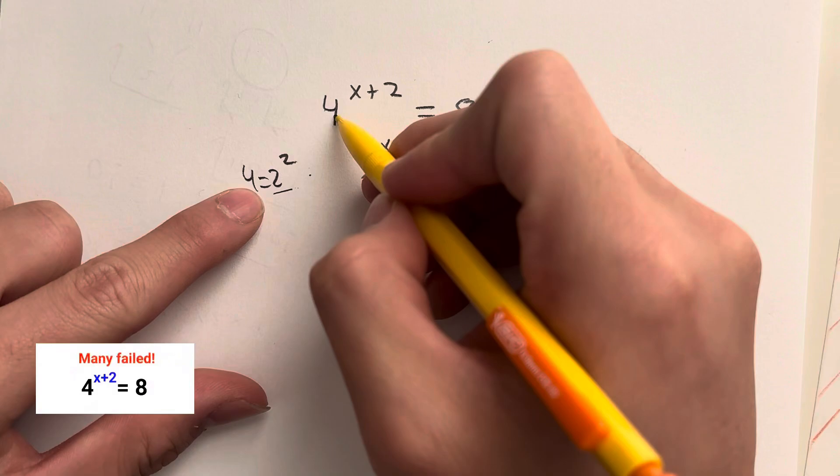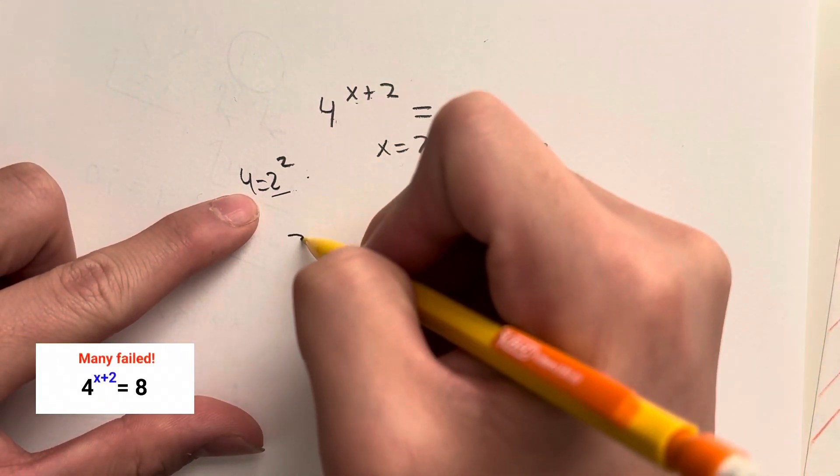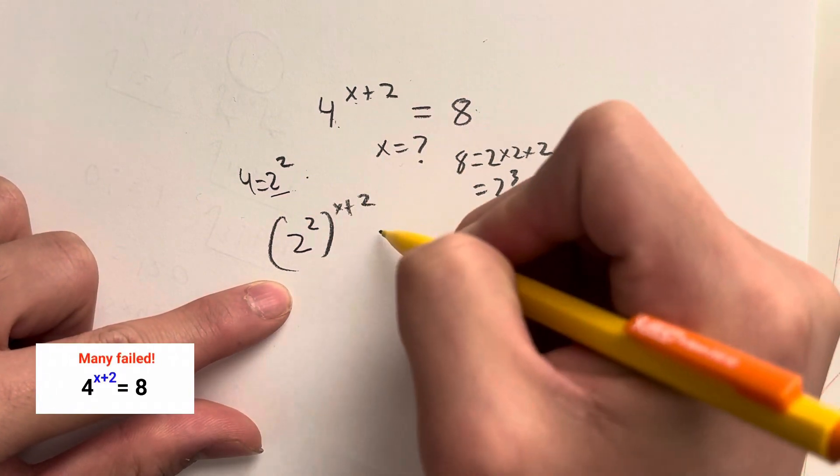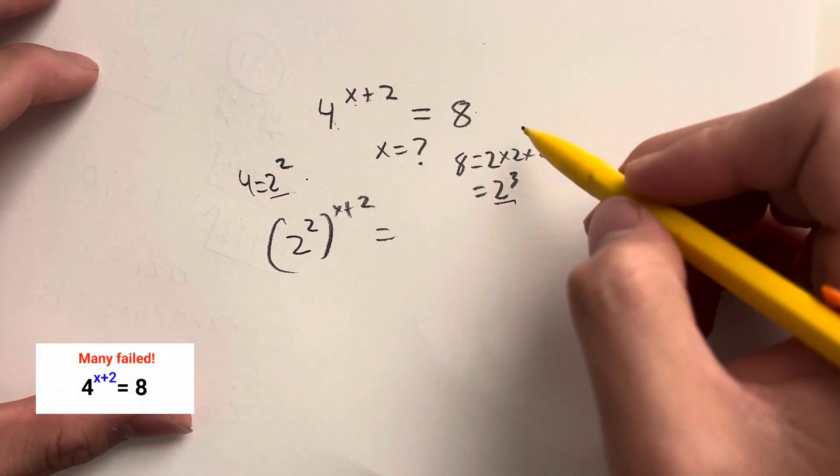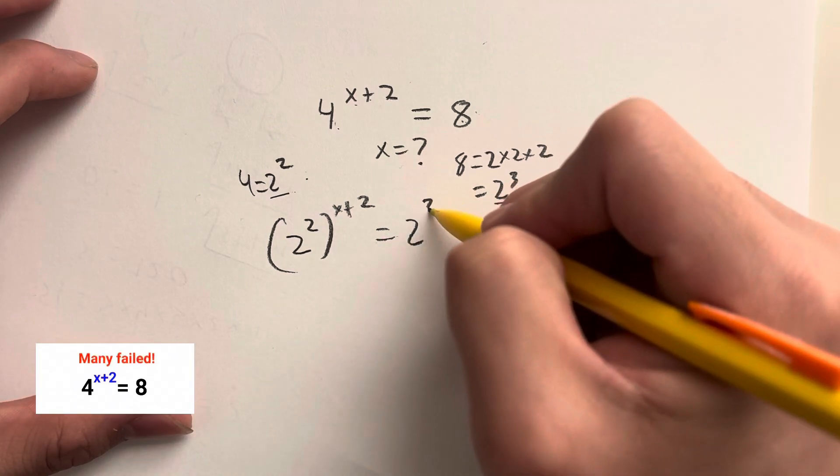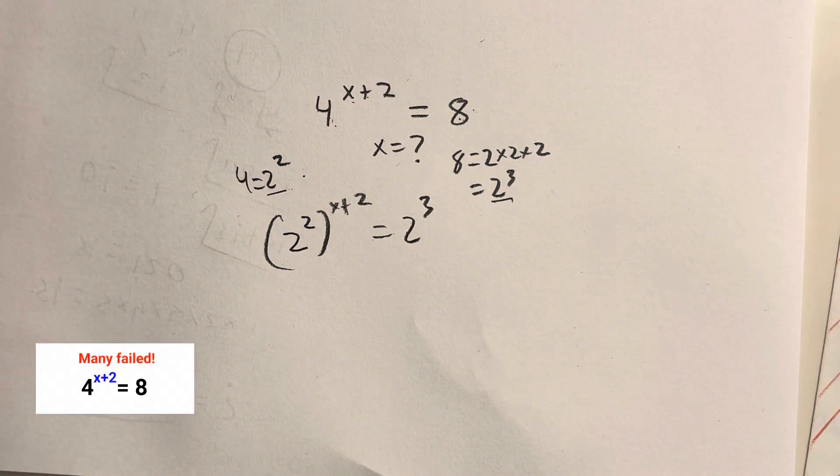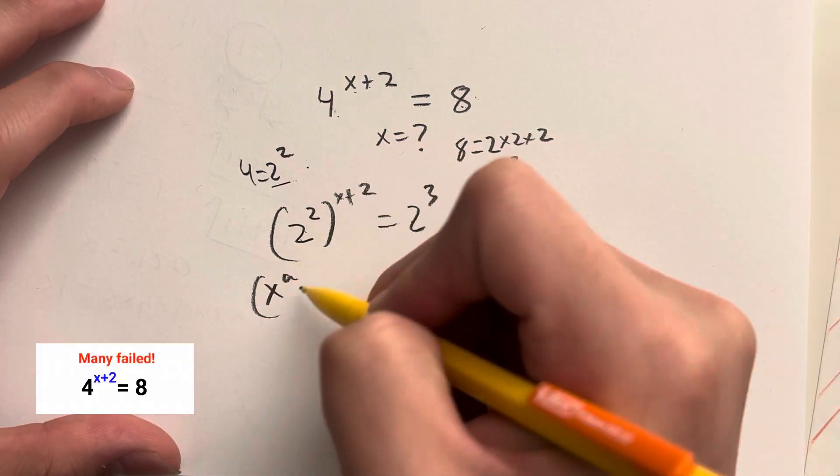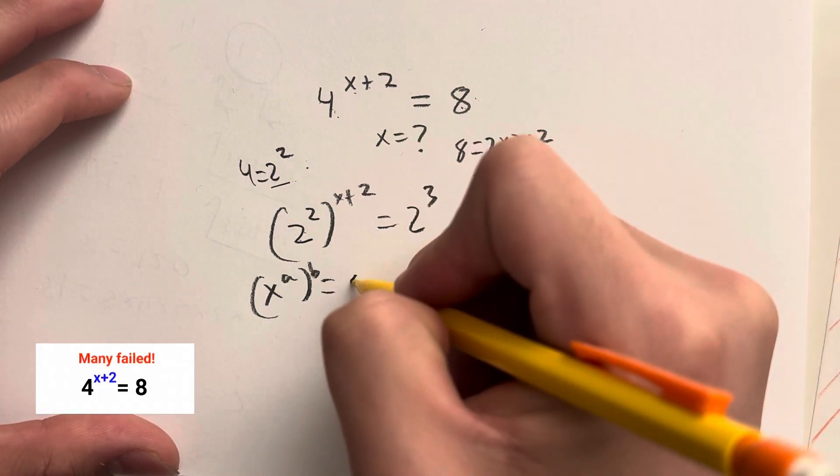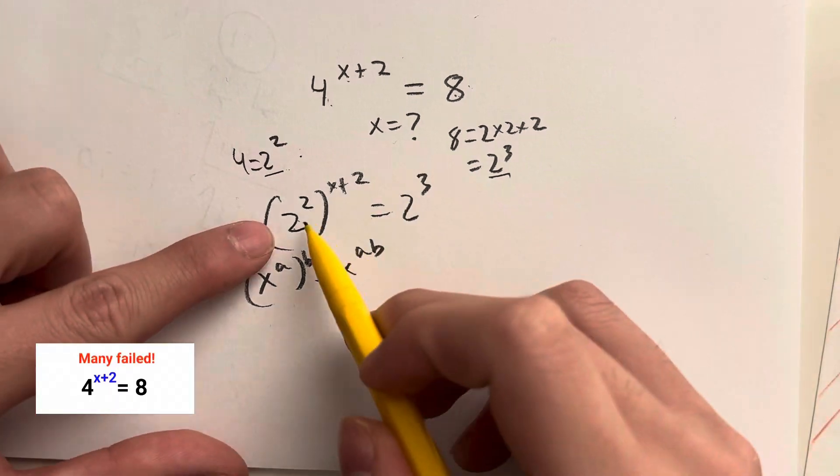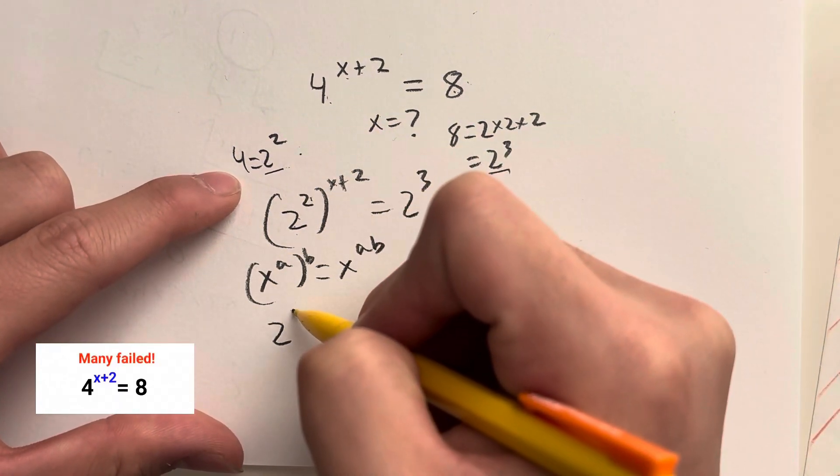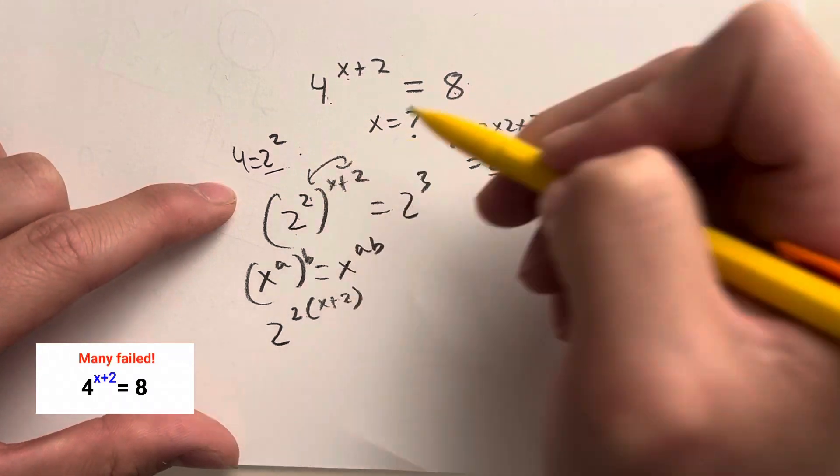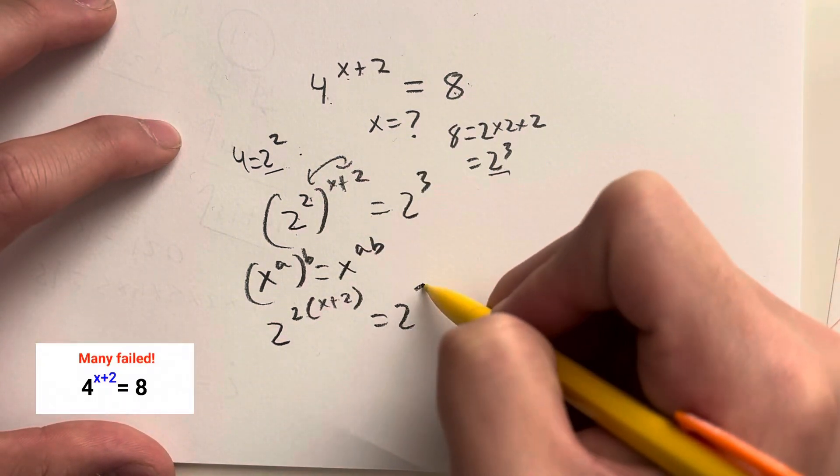Because what's 4 to the x plus 2 actually equal to? That's just equal to 2 to the second, because that's 4 to the x plus 2 power. And on this side, as we just established, 8 is equal to 2 to the third power. And as you can see, we're almost done, because then we have to remember this rule in exponents. x to the a to the b power is always equal to x to the a times b. So in this case, this is just equal to 2 to the 2 times x plus 2. We're going to be multiplying these two with each other. And this is equal to 2 to the third power still.